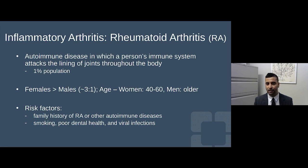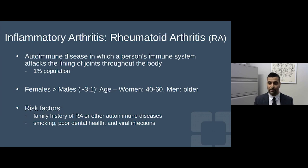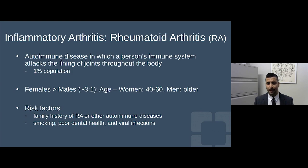Rheumatoid arthritis affects 1% of the population, and females are affected more than men — typically women in middle age from 40 to 60, while men are diagnosed at a slightly older age. Like all autoimmune conditions, we think these diseases happen in folks with a genetic predisposition who then experience some environmental insult — a virus, smoking, or another traumatic event that makes the immune system vulnerable. I want to make a strong association: smoking has been shown to increase the formation of the CCP antibody, so the major modifiable risk factor for RA is to stop smoking.